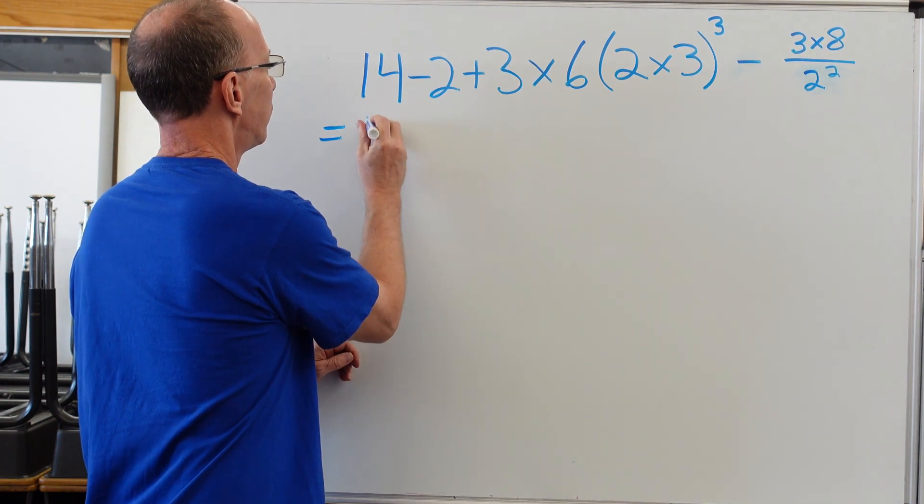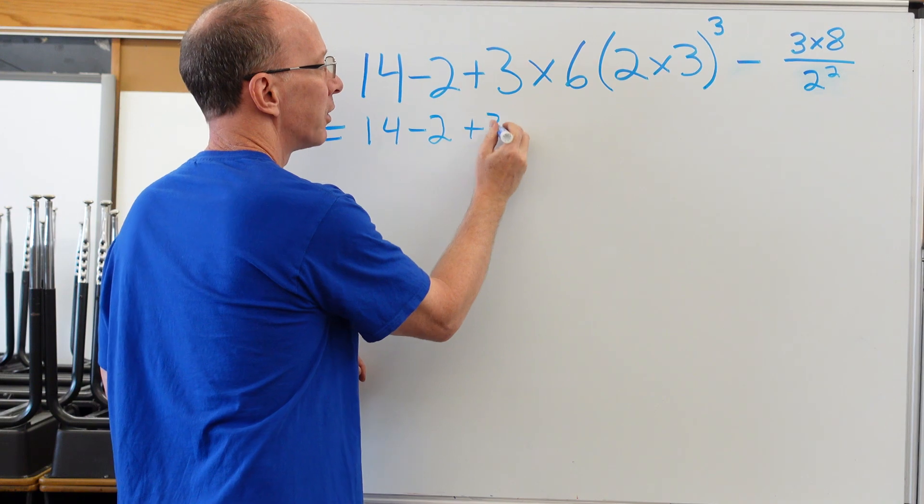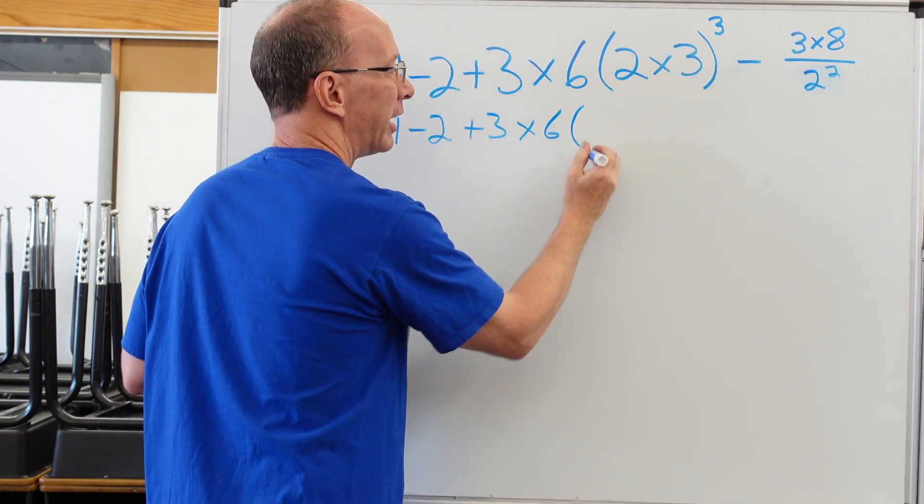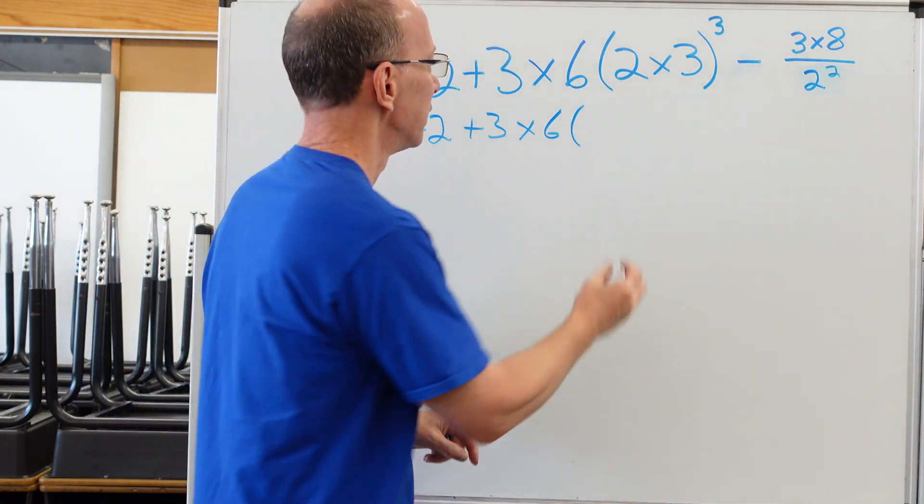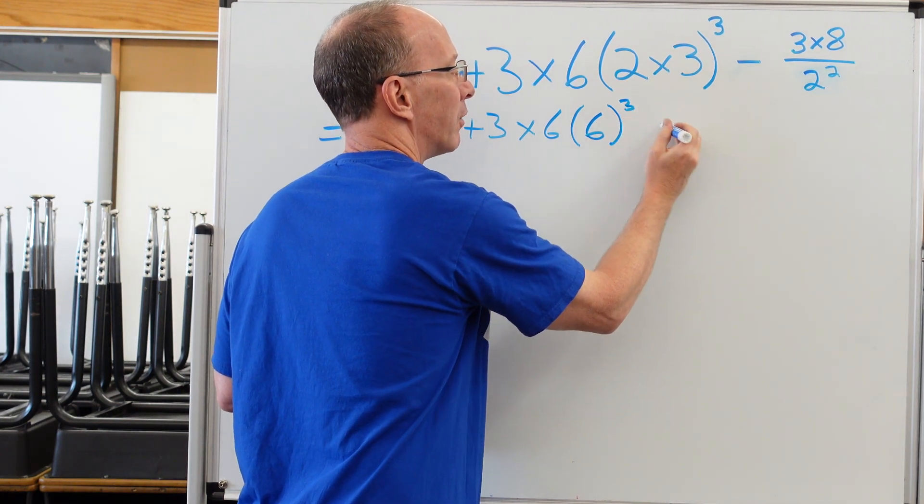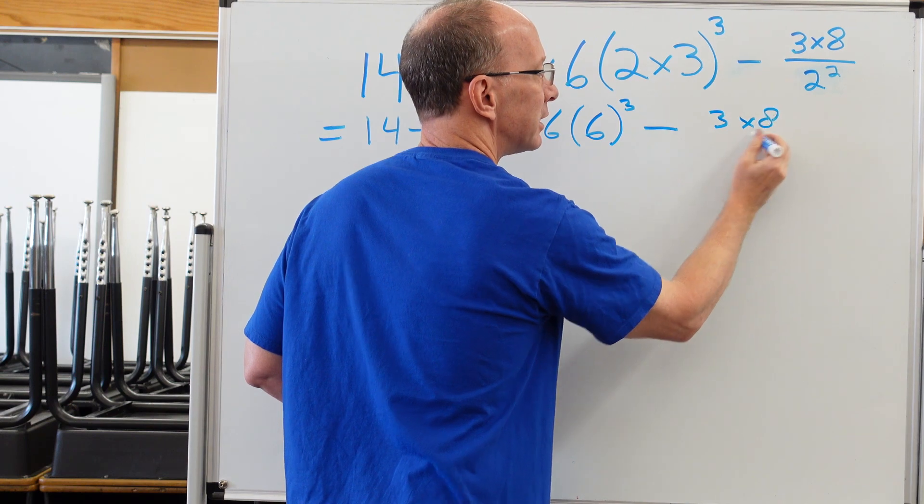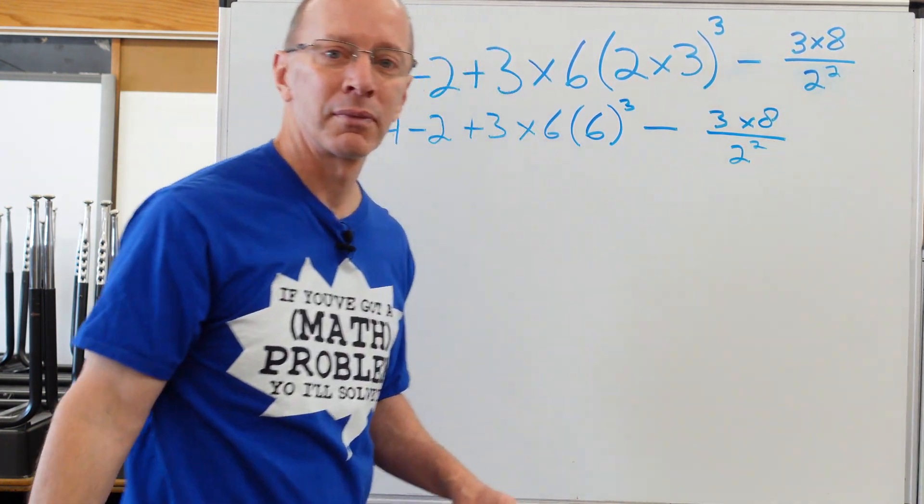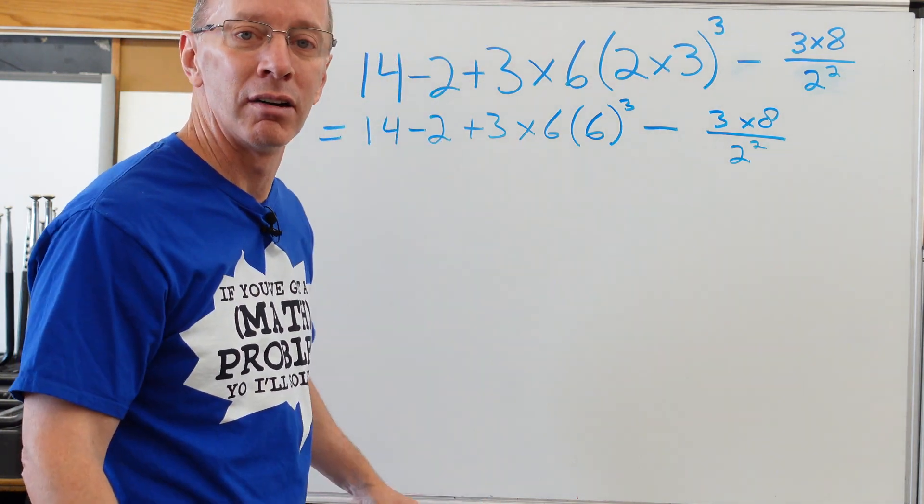So I have 14 minus two plus three times six, and what's inside the parentheses? Two times three? Six. So I'm putting a six right here, and then to the third power, minus three times eight over two to the second power. All right. We're just going to keep on going.